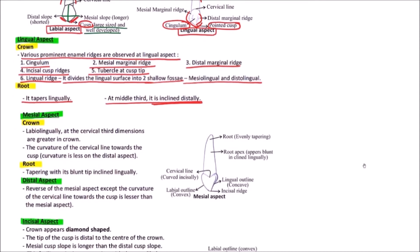Now the mesial aspect. The crown: labiolingually at the cervical third, dimensions are greater in the crown. The cervical line is curved incisally, showing curvature towards the cusp.